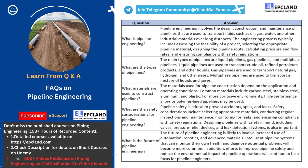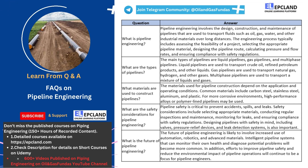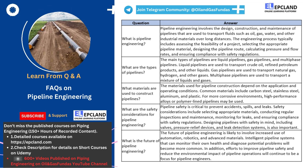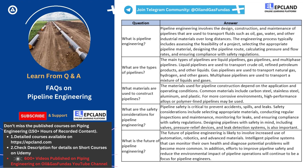In summary, the materials used for pipeline construction depend on the application and operating conditions. Carbon steel and stainless steel are the most common materials used for pipelines, while high-performance alloys and plastic pipelines may be used for more corrosive environments. The selection of materials is critical to ensure that the pipeline can transport fluids safely and efficiently.